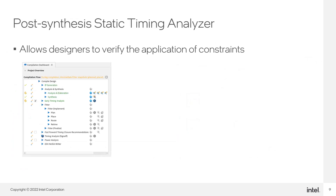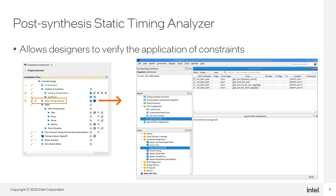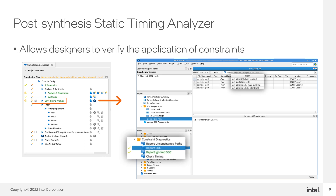The DNI flow also enables a post-synthesis timing analysis. This allows you to run the timing analyzer directly after synthesis — on the Compilation Dashboard, this stage is referred to as Early Timing Analysis. Post-synthesis timing analyzer loads the constraints defined in the SDC on RTL files, which can be reported via standard constraint diagnostics reports to verify the correct application of constraints. In addition, post-synthesis static timing analysis provides an early view of the design's core timing, giving you the ability to iterate on timing analysis results during the initial stages of the design, shortening the design cycle and helping to achieve timing requirements faster.